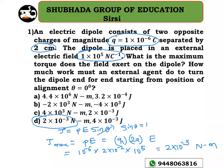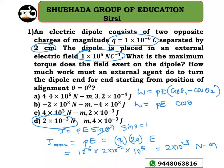For the second question on work done: W is equal to P into E into (cos theta 1 minus cos theta 2). The maximum work done is W equal to P into E into (cos theta 1 minus cos theta 2). Substituting the values, you get 4 into 10 to the power of minus 3. So option D is the right answer for this question.